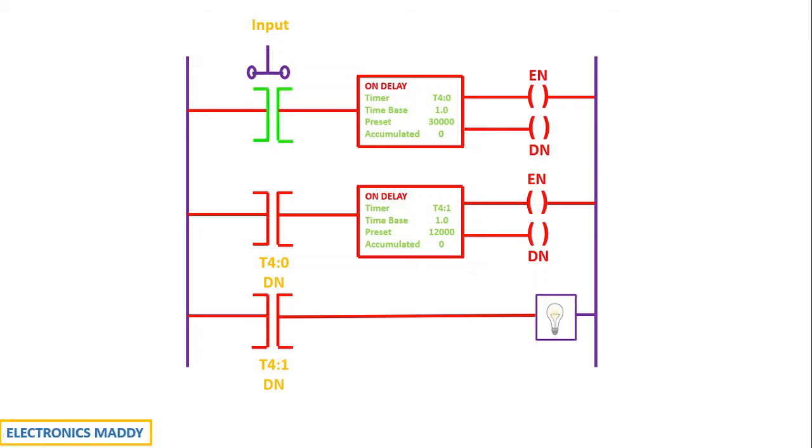Once I press the push button switch, the contact gets energized. Consequently, the rung gets energized. The on delay timer gets energized. According to the working of on delay timer, the enable bit goes high instantly and the timer starts counting values.